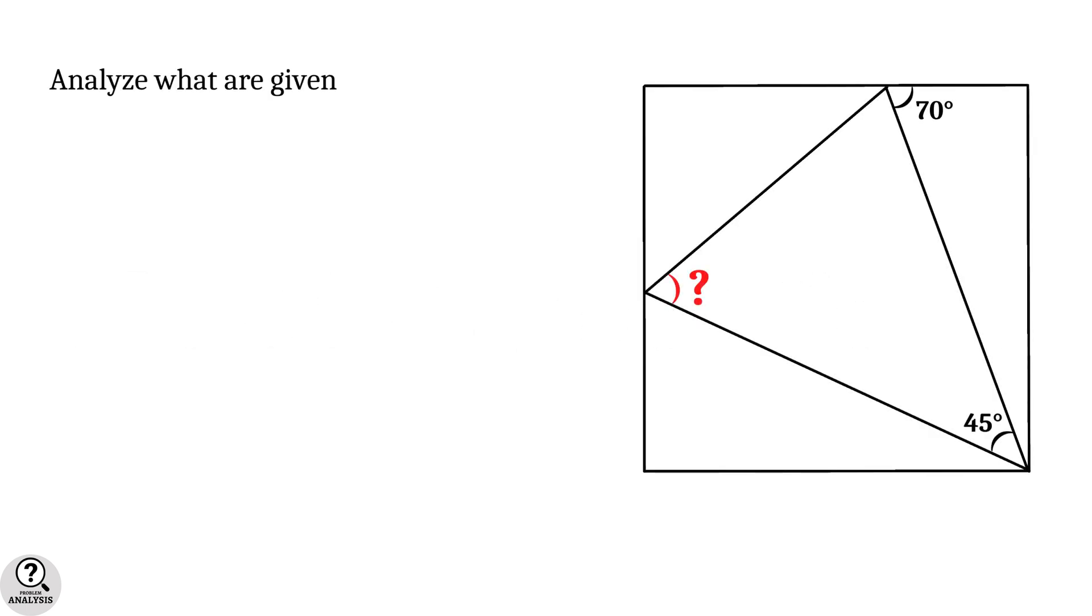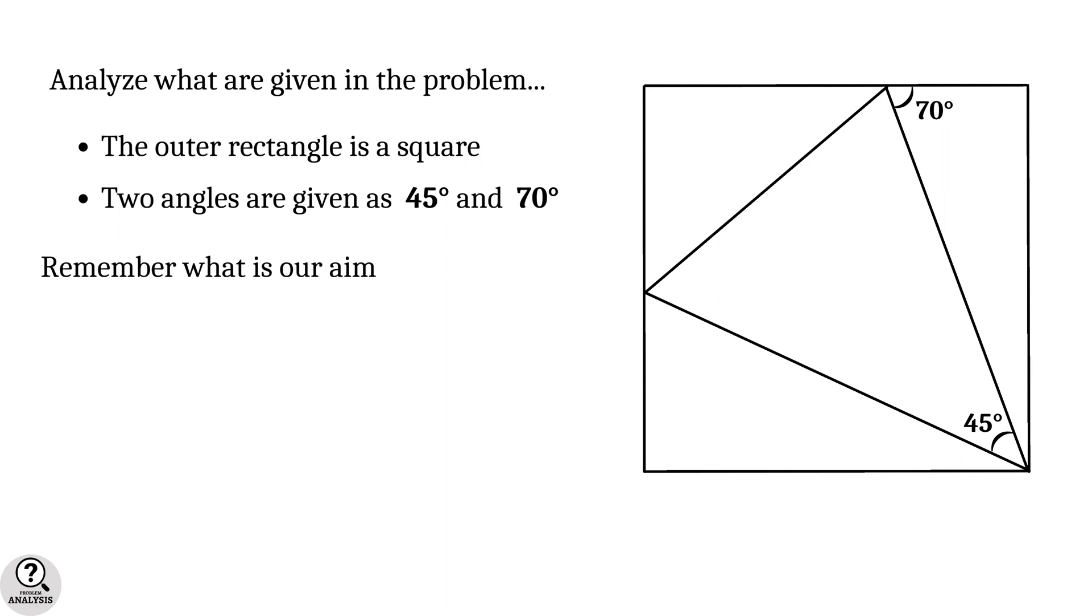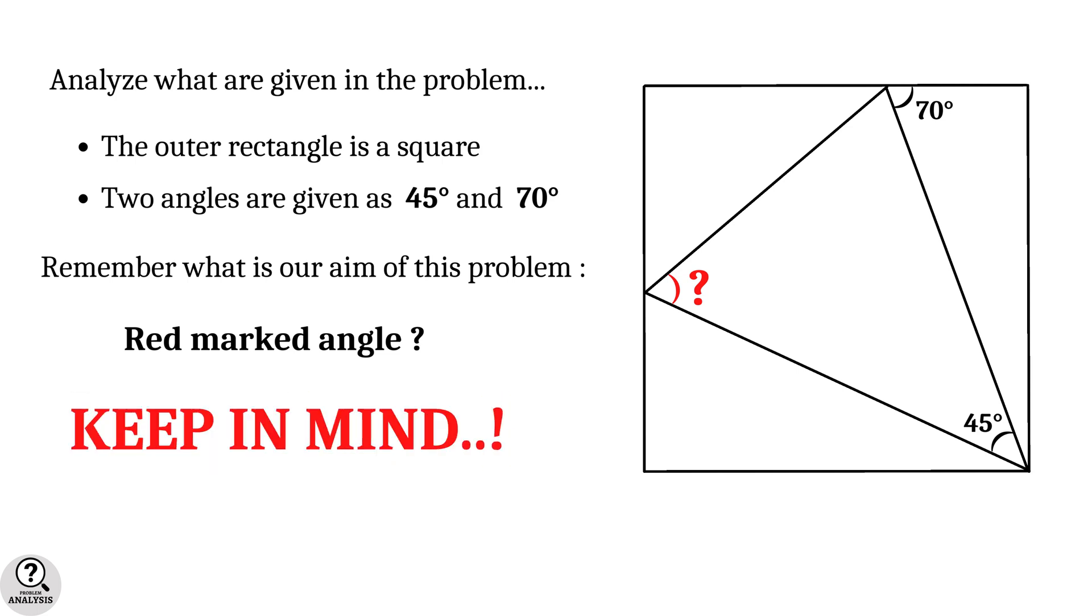First analyze what are given in the problem. Firstly, the outer rectangle is a square and then two angles are given as 45 degrees and 70 degrees. Now remember what is our aim of this problem. It is nothing but to find the red marked angle. This is the structure of our problem, so always keep in mind.